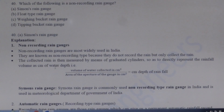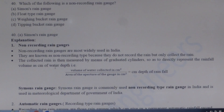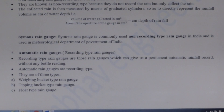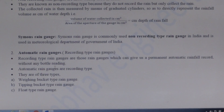Next question: Which of the following is a non-recording rain gauge? Non-recording type rain gauges are those which do not record the rain but only collect it. In India, the Symon rain gauge is commonly used as a non-recording type. Recording type rain gauges include the weighing bucket type, tipping bucket type, and floating type rain gauges.